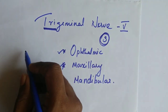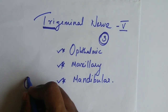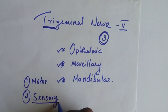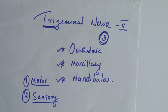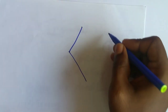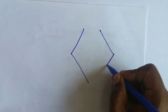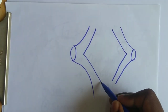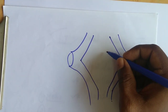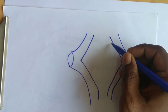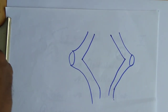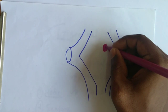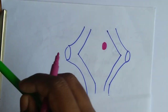The trigeminal nerve has got two functional components: one is motor and the other one is sensory. These functional components are located in the brain stem — specifically at the floor of the fourth ventricle, behind the pons, at the posterior aspect of the pons. We have two functional columns: one is the sensory component and medial to it we have the motor component.